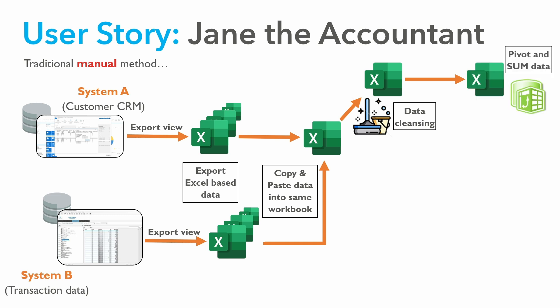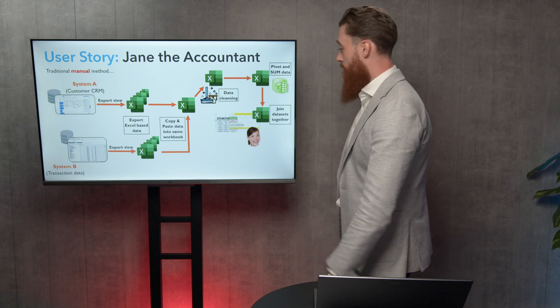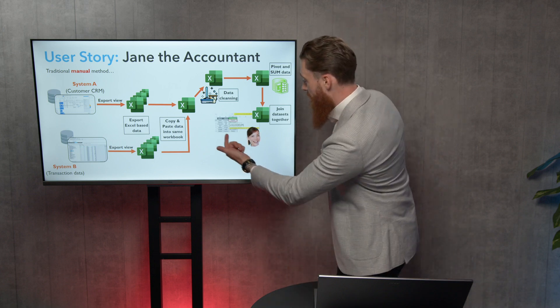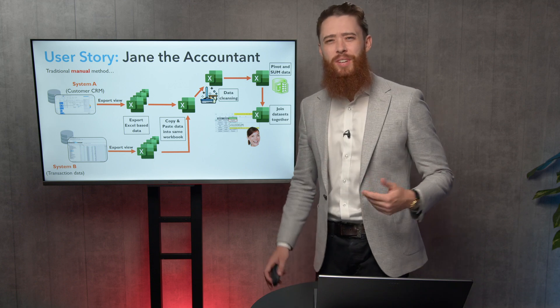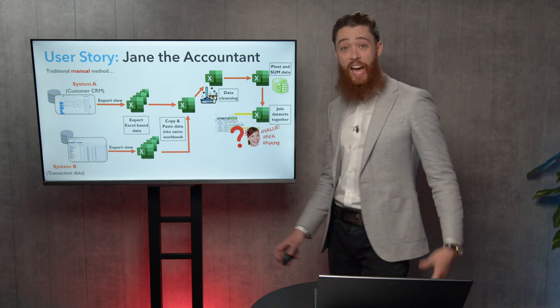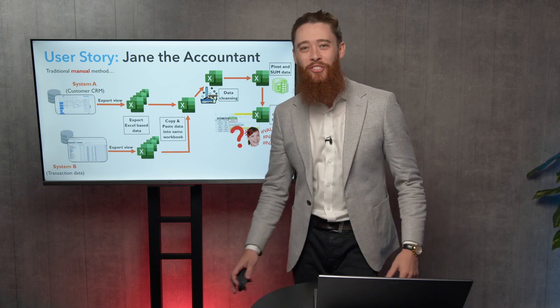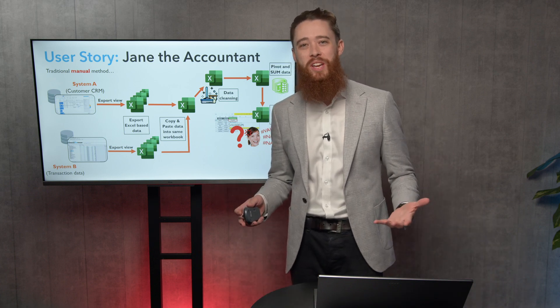Next, she's going to have to pivot and sum up that data. We've got transaction data from System B that needs to be summed up for each individual customer, so she can join that transactional data between the two systems. Once that's done, she's going to attempt to join the data sets together using the VLOOKUP formula. Hash value, hash NA, hash name comes through — she's confused, doesn't know what's going on, going on Stack Overflow forums to debug the error.